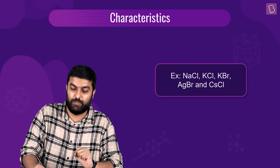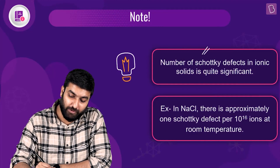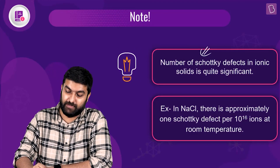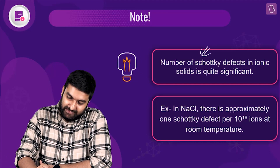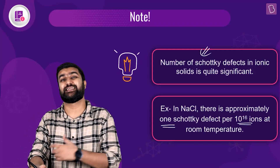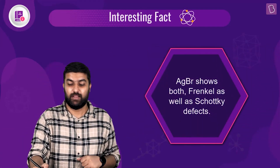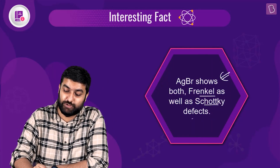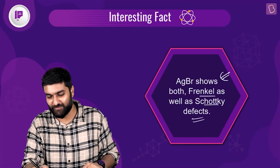The number of Schottky defects in ionic solids is quite significant — there is one Schottky defect for every 10 to the power 16 ions. Another important fact: AgBr shows both Frenkel as well as Schottky defects, which is important to remember.